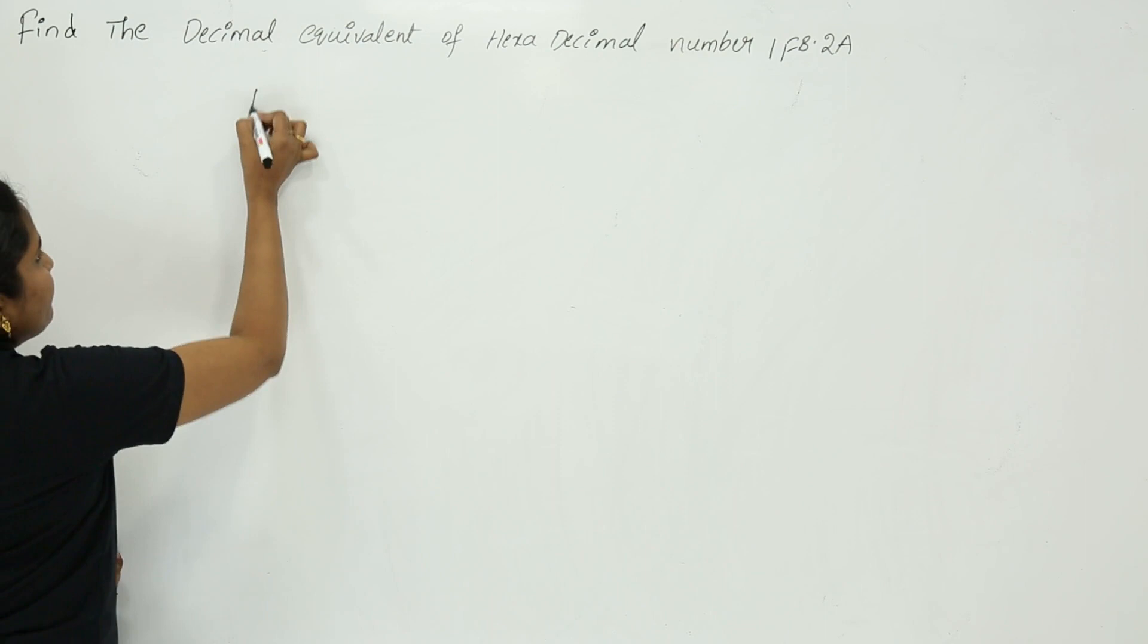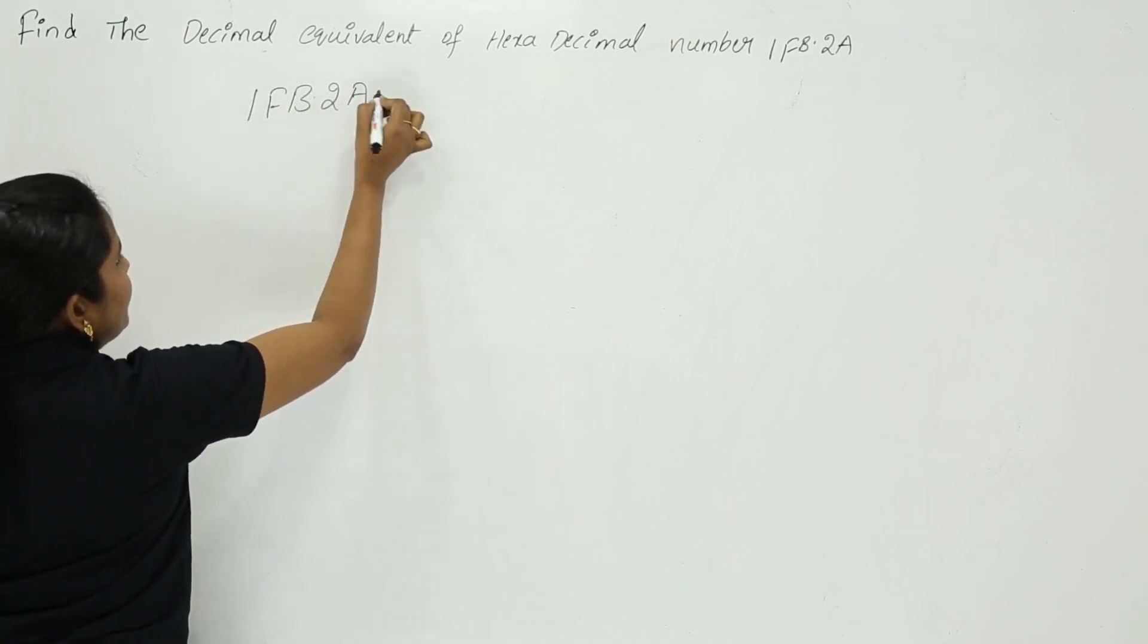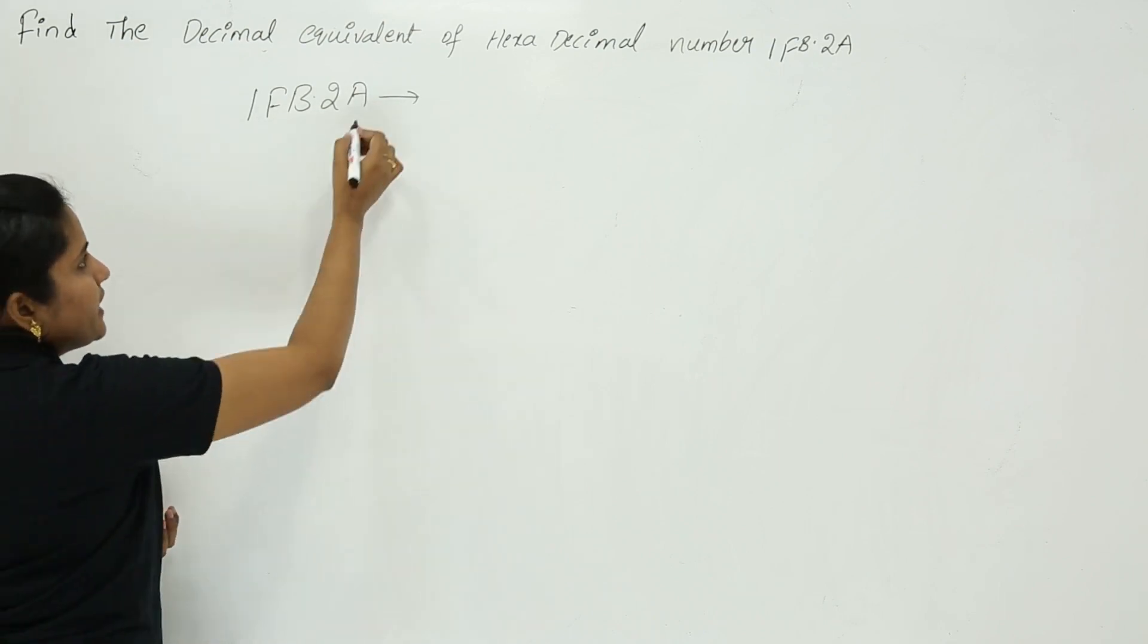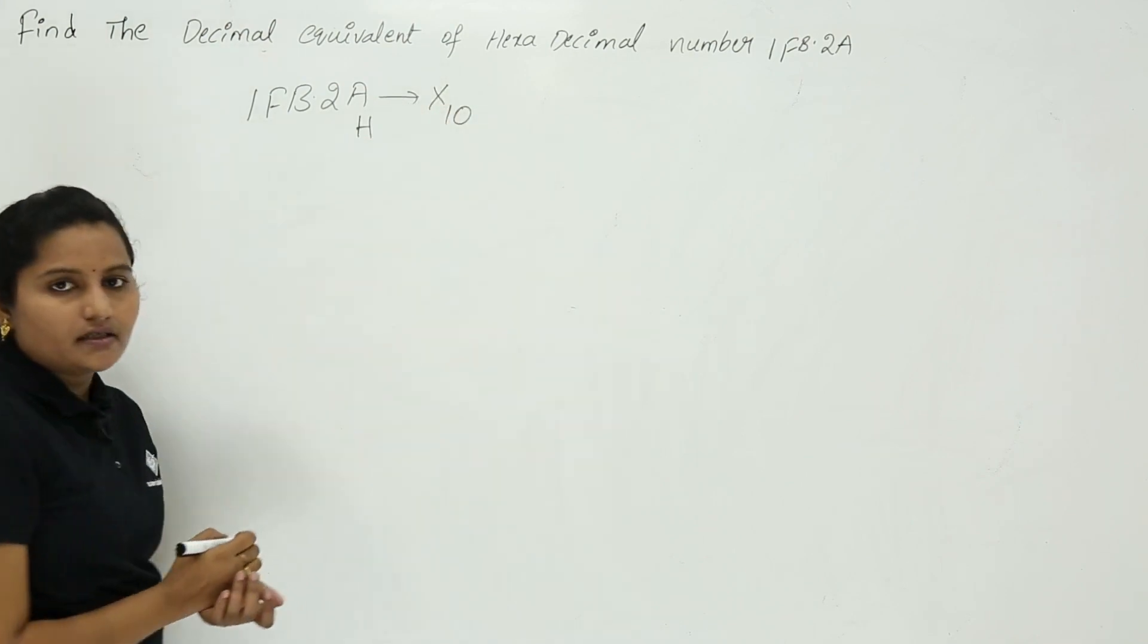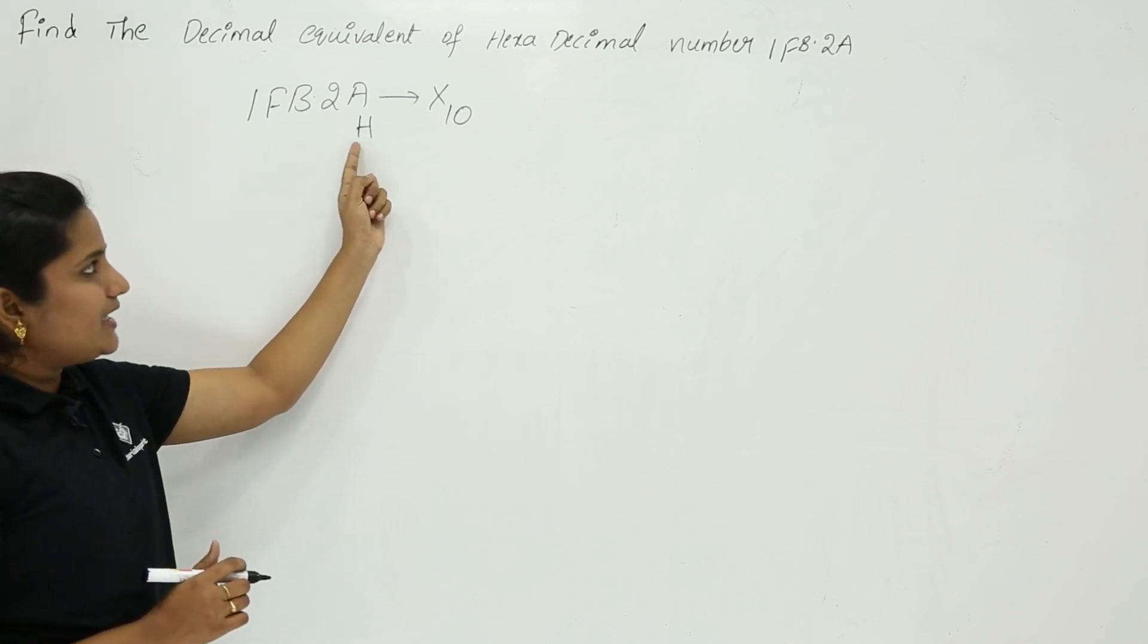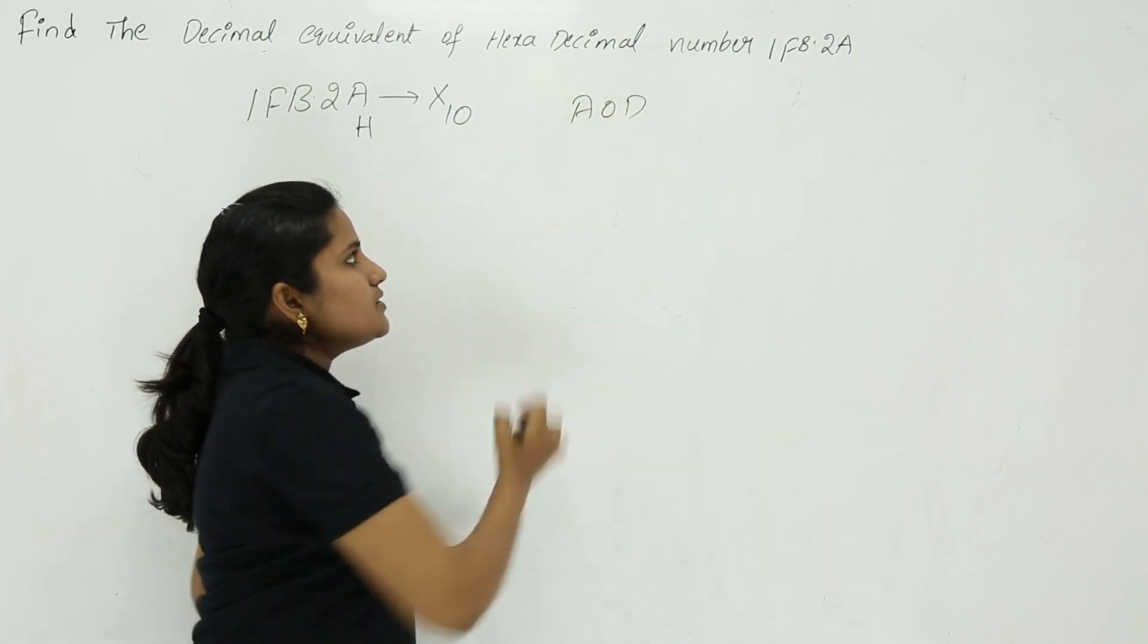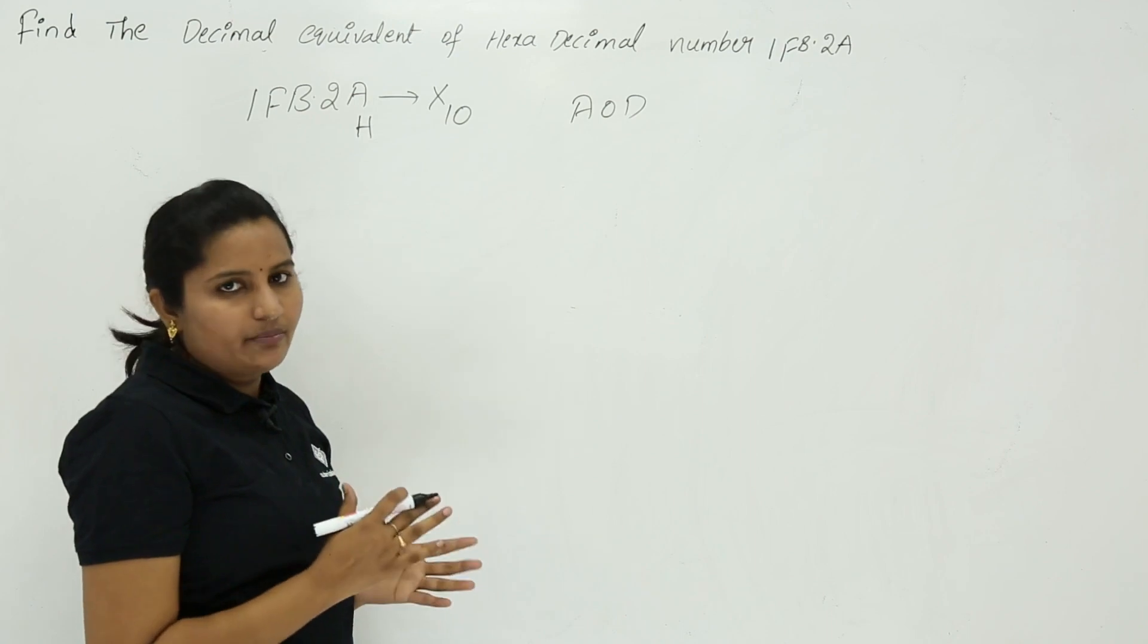Here we need to find out the decimal equivalent of 1FB.2A. That means the given 1FB.2A is a hexadecimal number, and we need to find out the decimal equivalent. The conversion is related to any base to decimal. You just remember, like anti-division - that means multiplication.